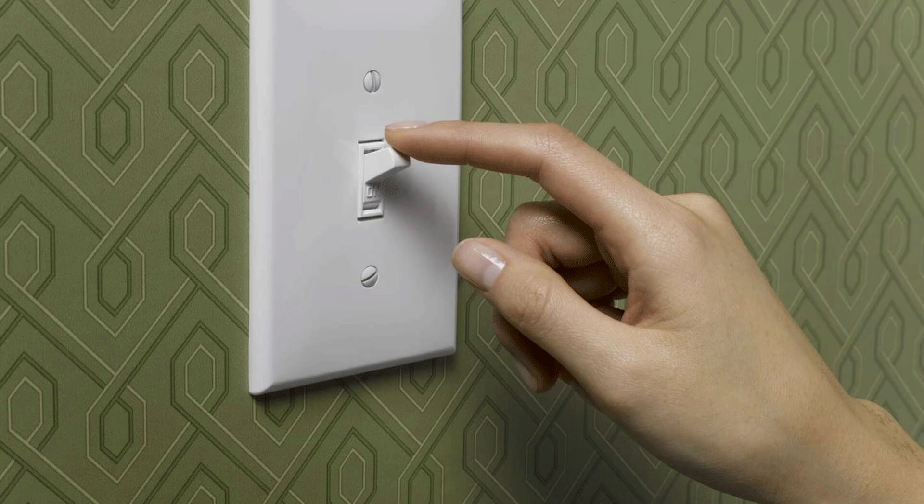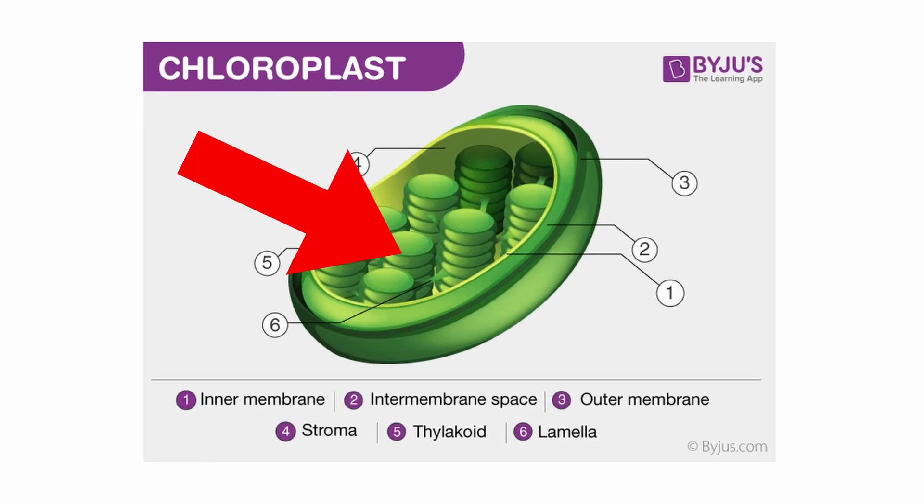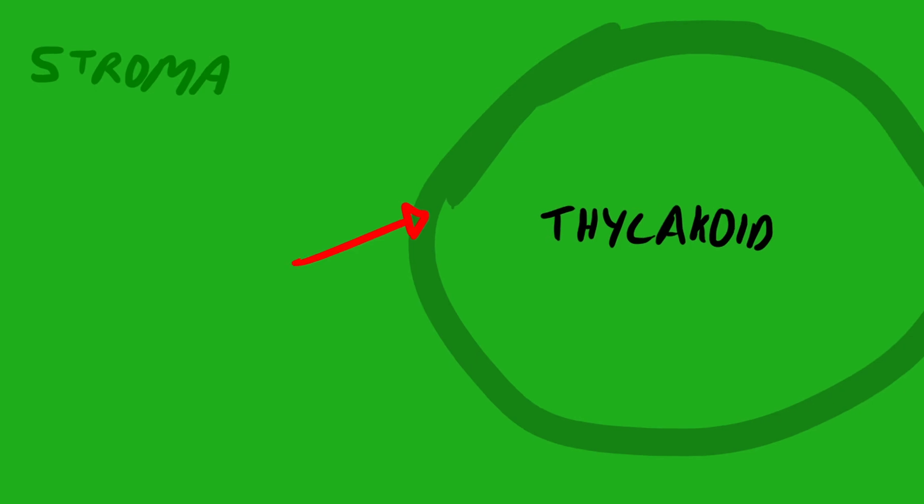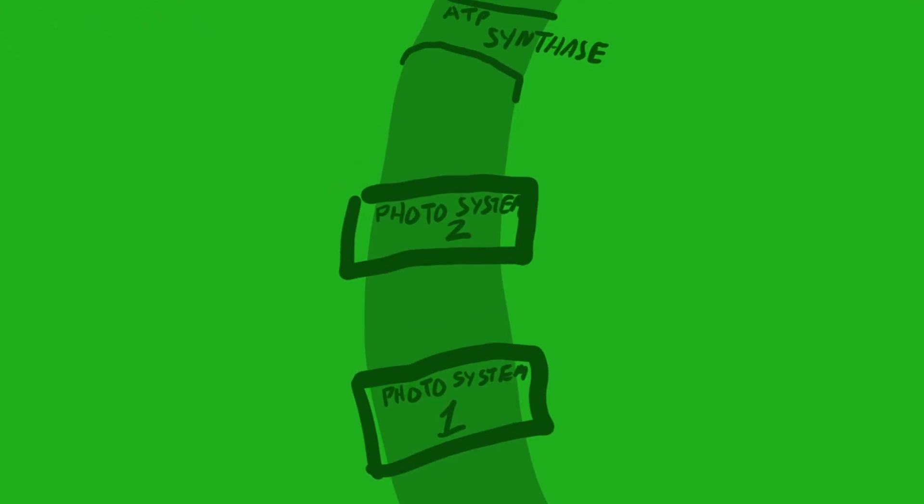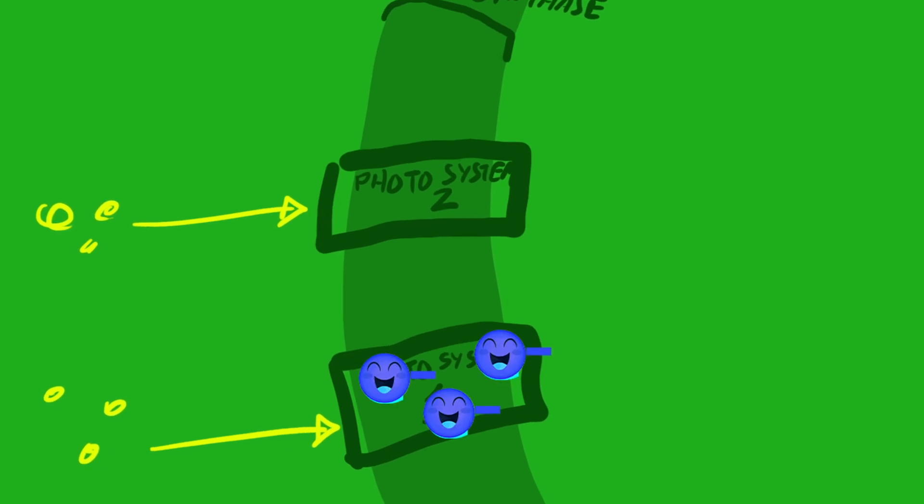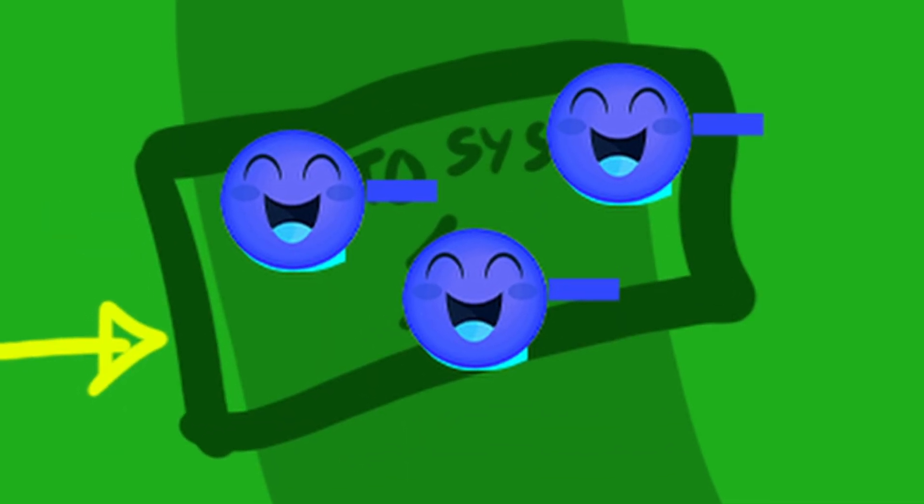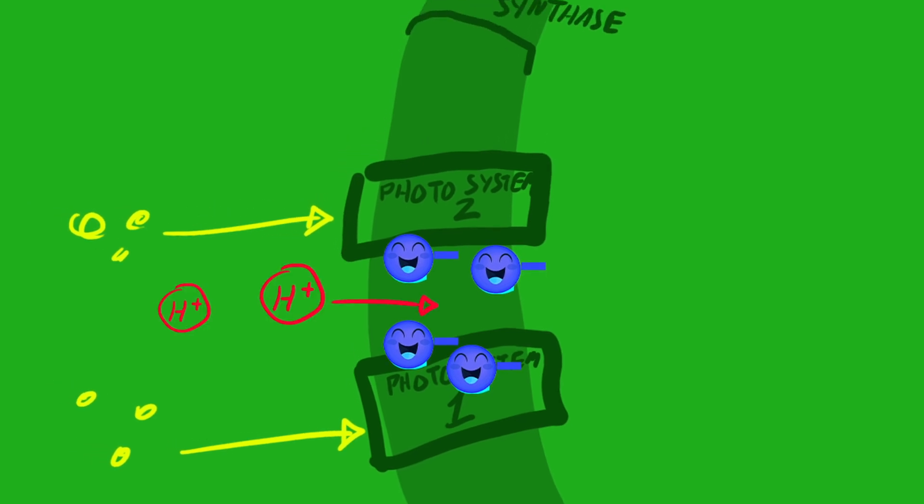Chloroplasts use light-dependent reactions. The chloroplasts have little coin-looking things inside them called thylakoids. In the membrane of the thylakoids, photosystems absorb photons that excite electrons. Oh look, they're all jumpy and happy. The electrons move into the thylakoid membrane and pull hydrogen from the stroma.